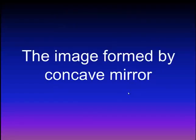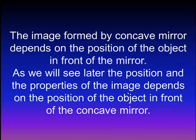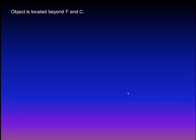We will talk about the image formed by a concave mirror first. The image formed by a concave mirror depends on the position of the object in front of the mirror. Our first drawing will be for an object located beyond F and C, more than double the focal length.